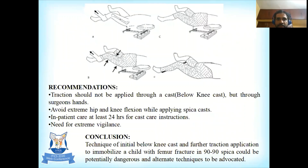A pictorial representation shows how to apply hip spica casts without complications. The authors recommend that traction should not be applied through a below-knee cast but through the surgeon's hands, to avoid extreme hip and knee flexion while applying the spica. Inpatient care for at least 24 hours and extreme vigilance are required. The conclusion is that the technique of initial below-knee cast with further traction to immobilize in a 90-90 spica cast could be potentially dangerous, and alternative techniques should be advocated.